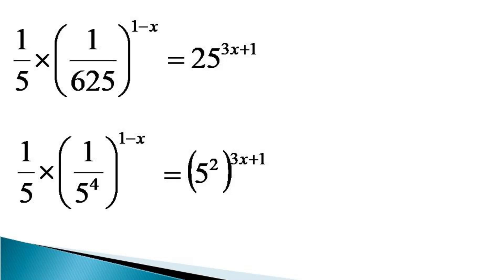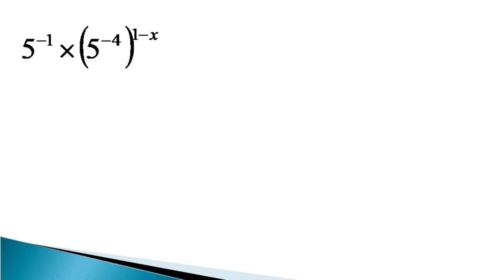On the left hand side, all the denominators can be expressed as negative powers, and on the right hand side the powers get multiplied. The resulting equation becomes on the left hand side 5 raised to the power minus 1 into 5 raised to the power minus 4, raised to the power 1 minus x, which becomes equal to 5 raised to the power 6x plus 2.